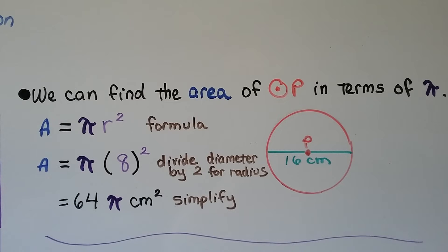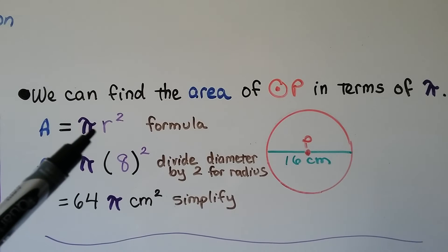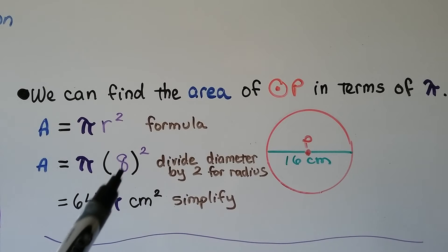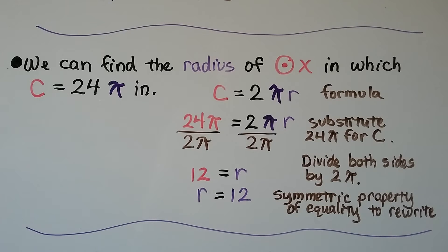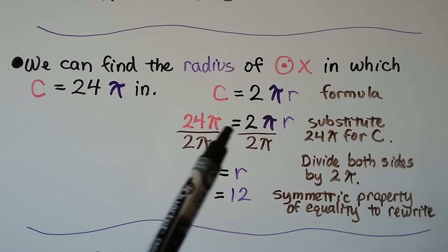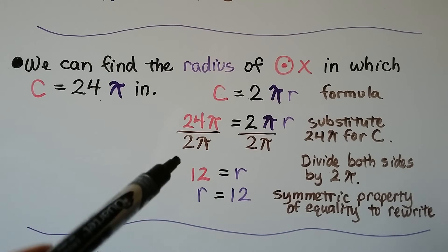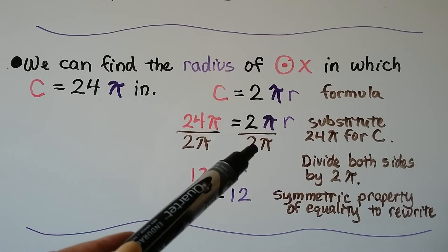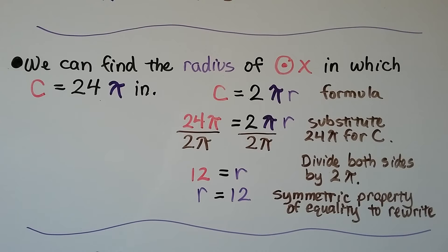We can find the area of circle P in terms of pi. Here's our formula, area equals pi times the radius squared. We've got a diameter of 16 centimeters, so we divide it by 2 for the radius to get 8. That's going to be squared. Our area is 64 pi centimeters squared. We can find the radius of circle X in which C equals 24 pi inches. Here's our formula for circumference, 2 pi r. We substitute 24 pi for C, so we have 24 pi equals 2 pi r. We divide both sides by 2 pi. 24 divided by 2 is 12, and pi divided by pi is 1. We can use the symmetric property of equality to rewrite this as r equals 12.